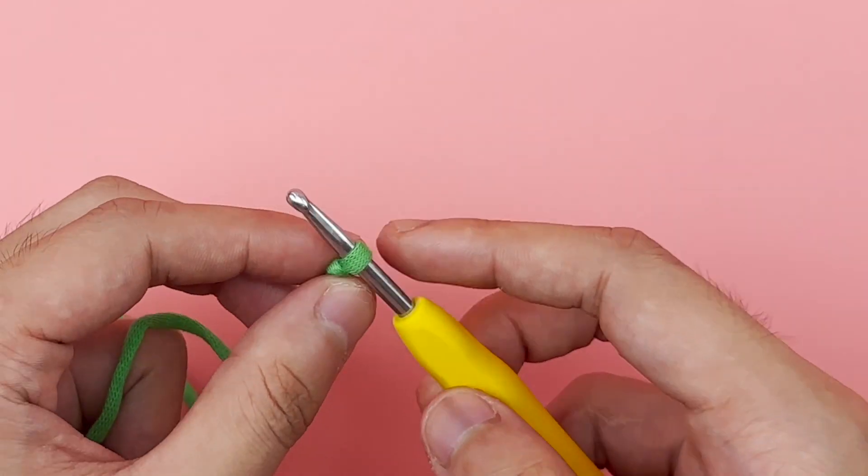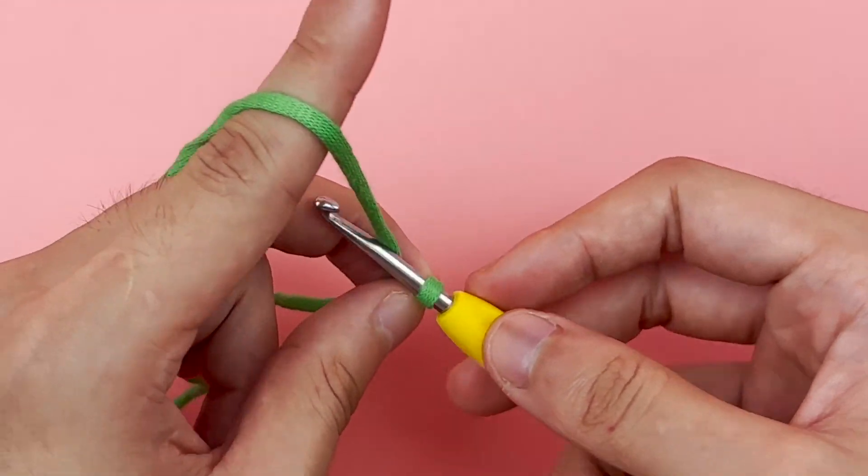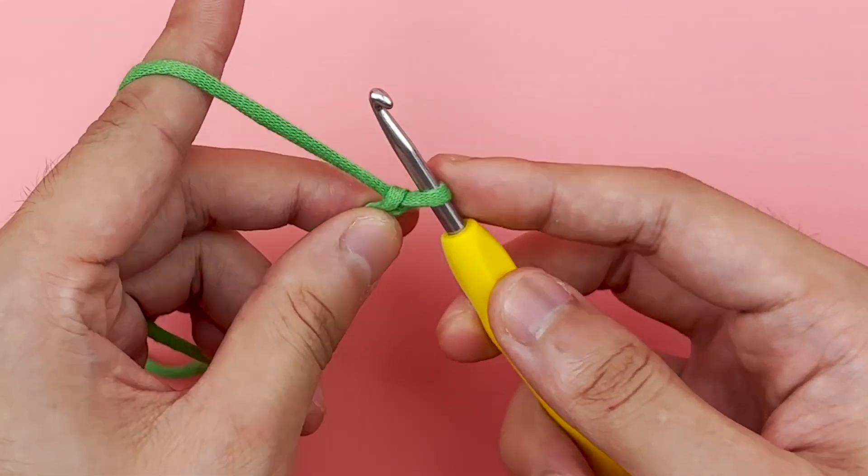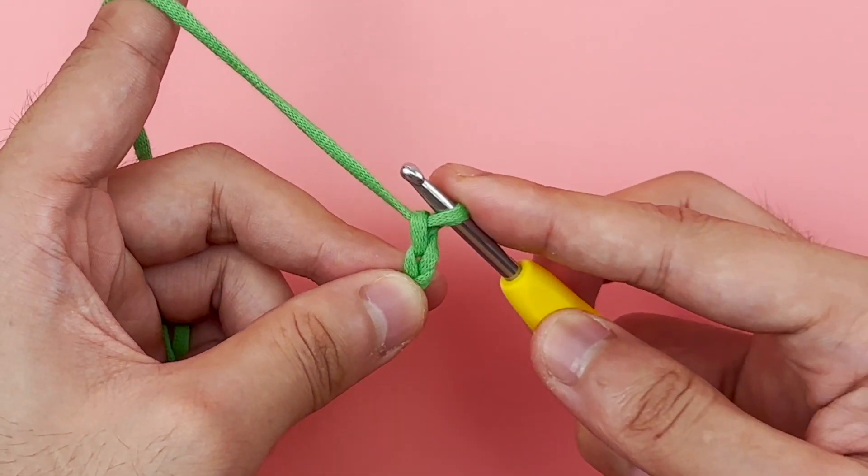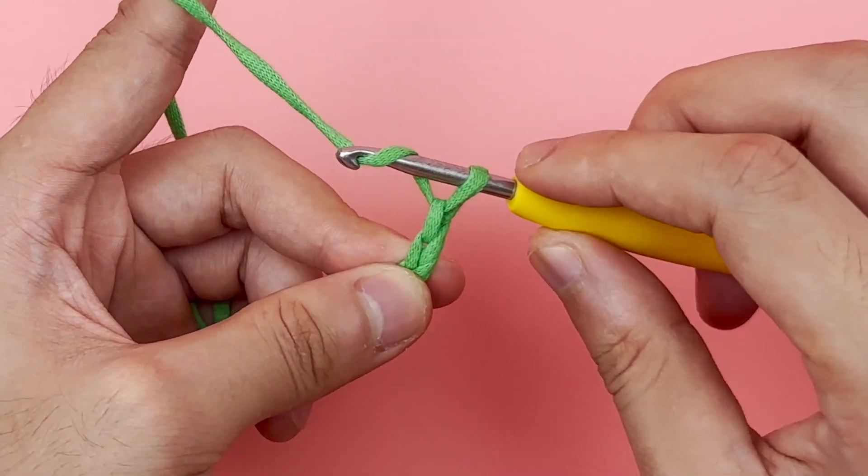Then pass the crochet hook through the knot and crochet twice directly as in the video. Now you will see that there are two v-shapes. Then you need to crochet once in the first v as in the video.